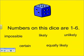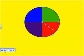We have practiced using the language impossible, likely, unlikely, certain, and equally likely. Now it is your turn to try.